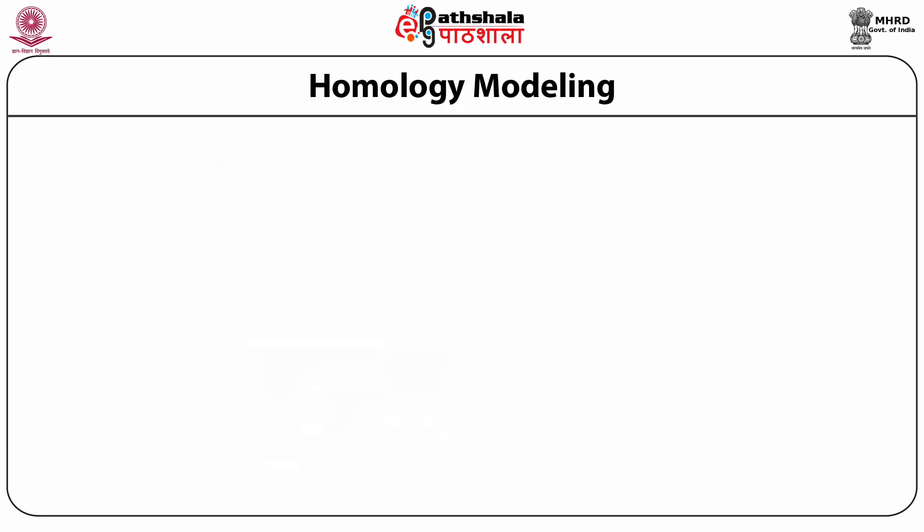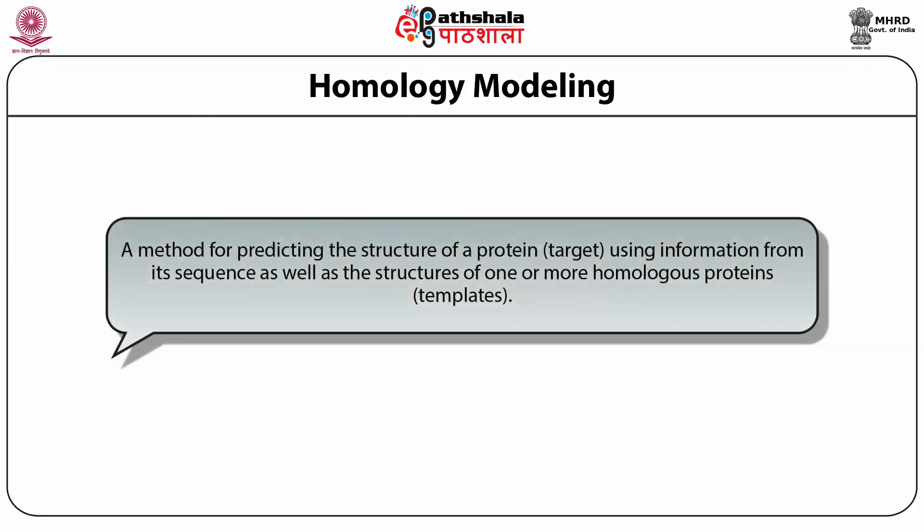This method of comparative modeling, also known as homology modeling, is a method for predicting the structure of a protein — let's call it the target — using information of its sequence as well as the structures of one or more homologous proteins, let's call them the templates.